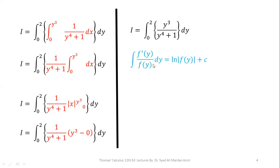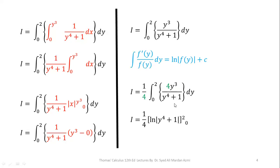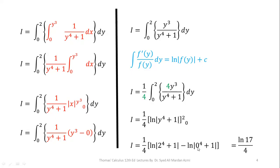We apply the formula: if the derivative of the denominator is available in the numerator, the integral is the natural log of the denominator plus c. The derivative of the denominator y to the power 4 plus 1 is 4y cubed, so we multiply the numerator by 4 and divide outside by 4 to balance. This gives 1/4 times the natural log of (y to the power 4 plus 1), evaluated from 0 to 2. Applying the fundamental theorem, and noting that natural log of 1 is 0, we get 1/4 times natural log of 17, since 2 to the power 4 plus 1 equals 17.